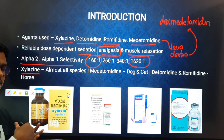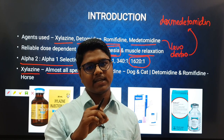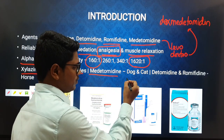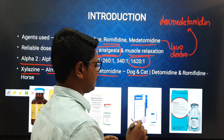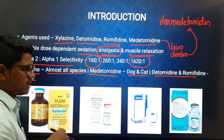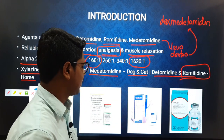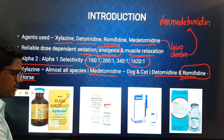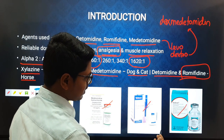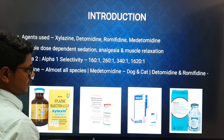Xylazine is commonly used in almost all species — referring to Lumb and Jones, the xylazine-ketamine protocol can be found for almost all species. Medetomidine is approved in the USA for use in dogs and cats. Dexmedetomidine and romifidine are basically approved for use in horses, though some articles have presented use of romifidine in wild animals also. These drugs include xylazine, medetomidine, Sydavet (romifidine), and detomidine.